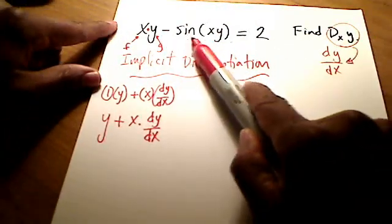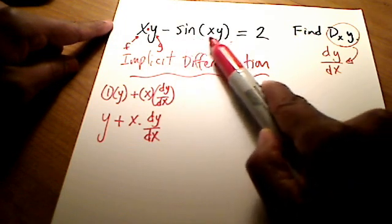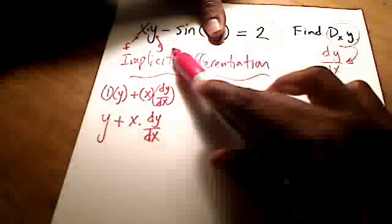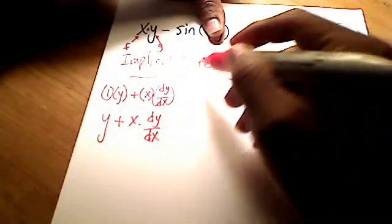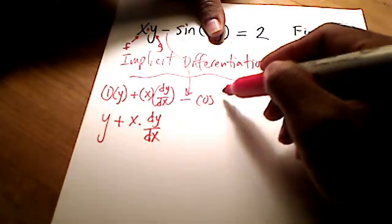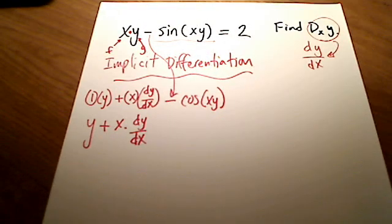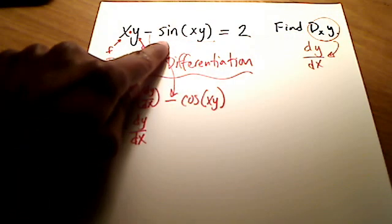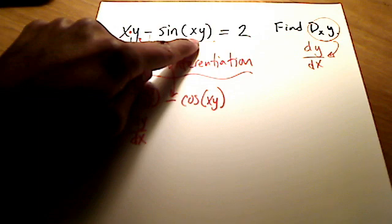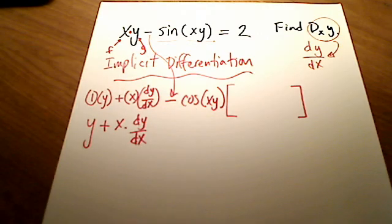Now I've got minus sine of quantity xy, where xy is the argument for sine. To take the derivative of this, we need the chain rule. Let's cover up the argument for a second: the derivative of negative sine is cosine. So the derivative of sine gives us cosine of the same argument — that's the chain rule applied to the outer function of sine.